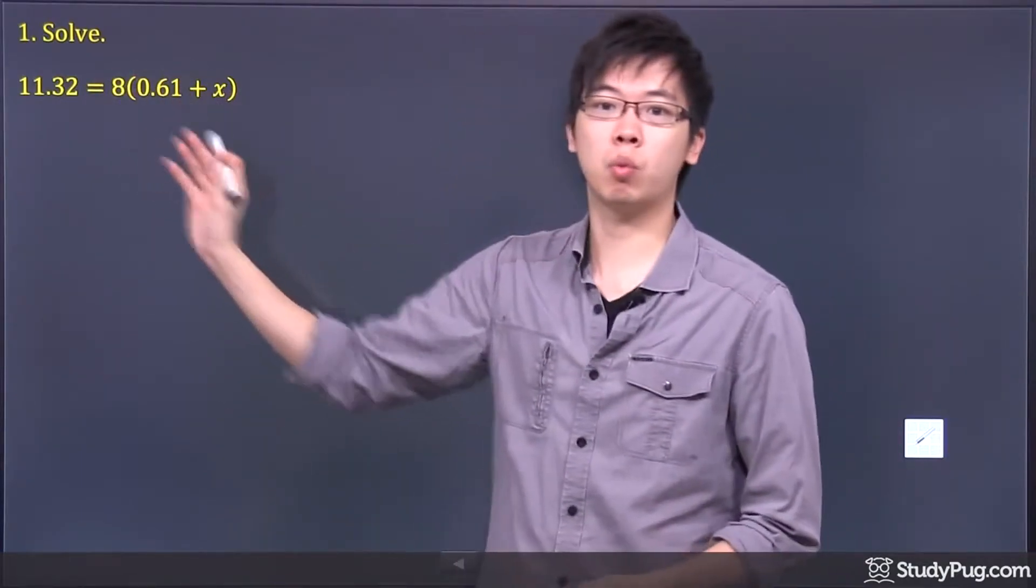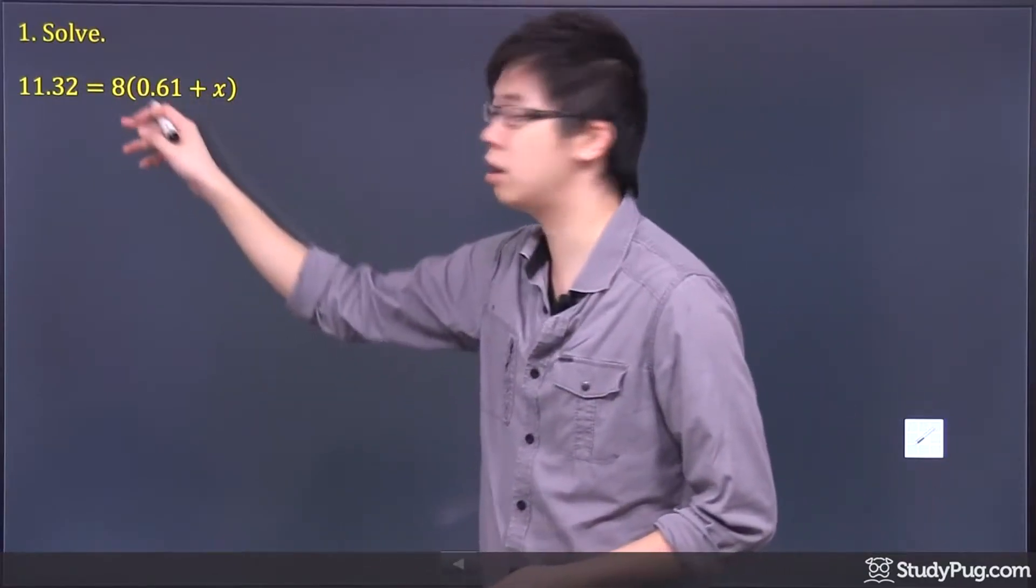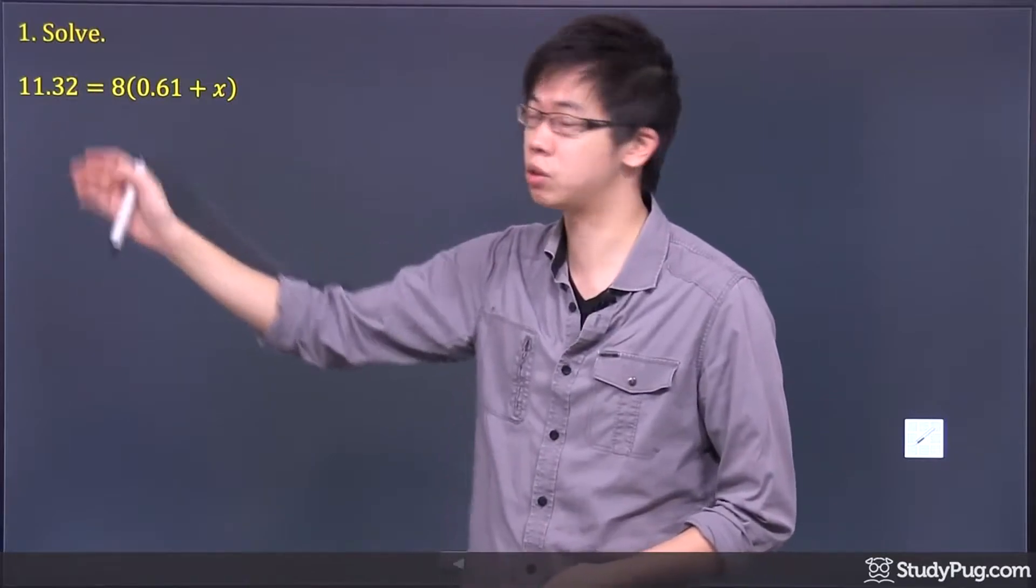The 8 is furthest away from the x, so that's something you might want to get rid of first, because you can't touch the inside unless you remove something that's on the outside first.